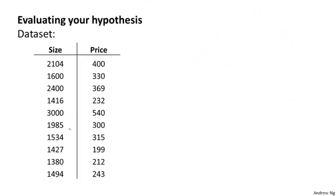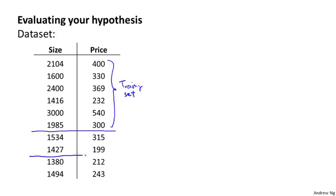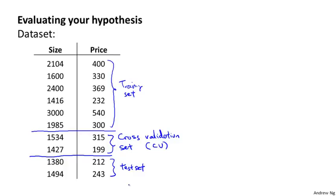To address this problem in a model selection setting, instead of splitting data into just a training set and test set, we split it into three pieces: the training set, the cross validation set (abbreviated CV, sometimes called the validation set), and the test set. A typical ratio would be 60% of your data to training, 20% to cross validation, and 20% to test.